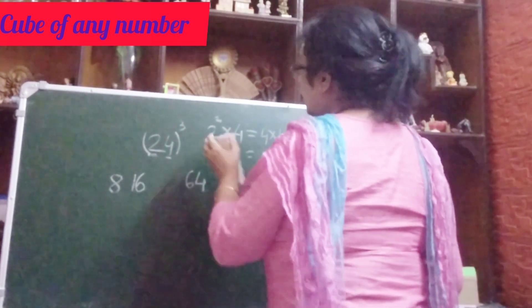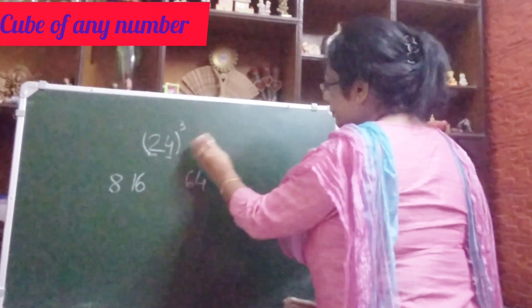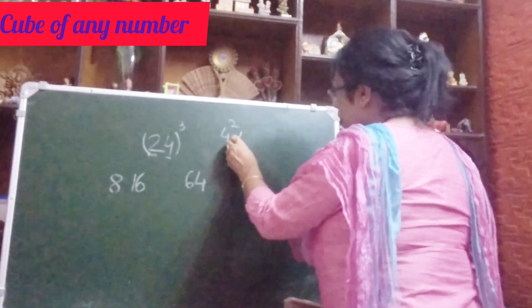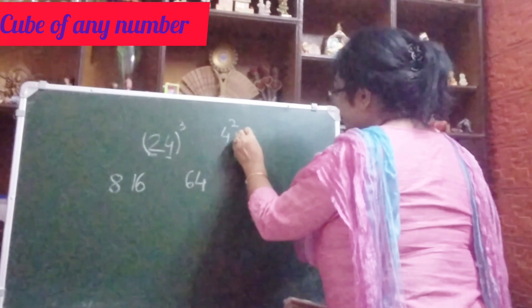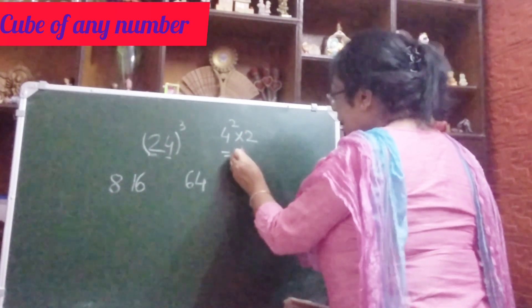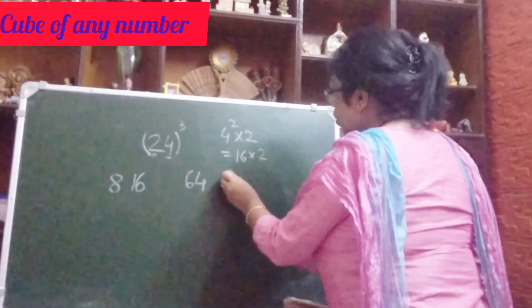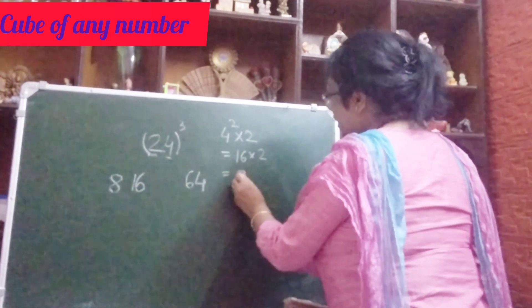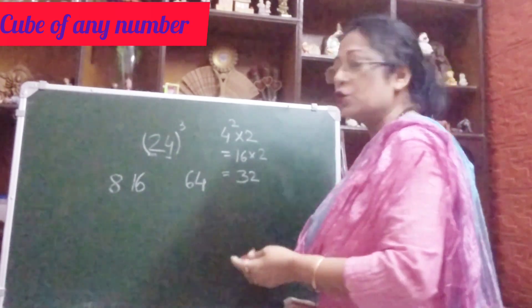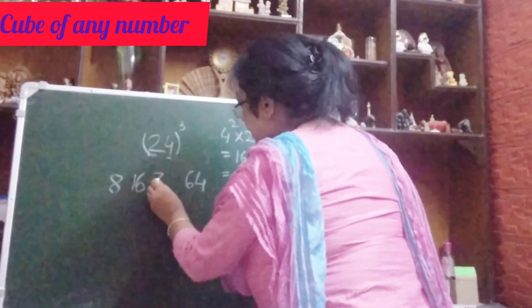Next you do the same thing with the second digit — 4 squared multiplied by 2. So 4×4=16, 16×2=32. You will get 32. So you write here 32.